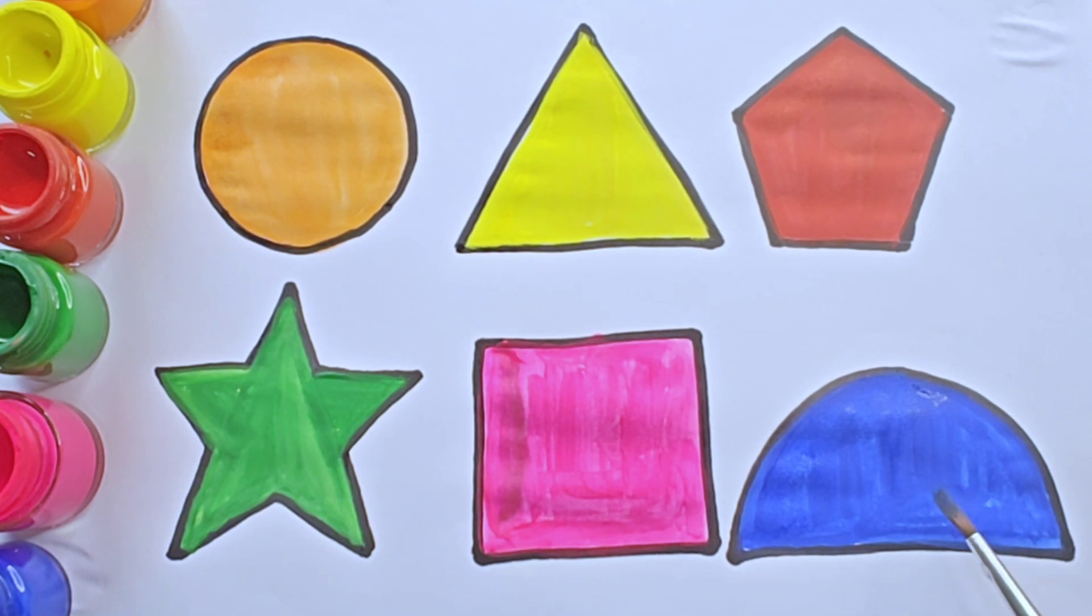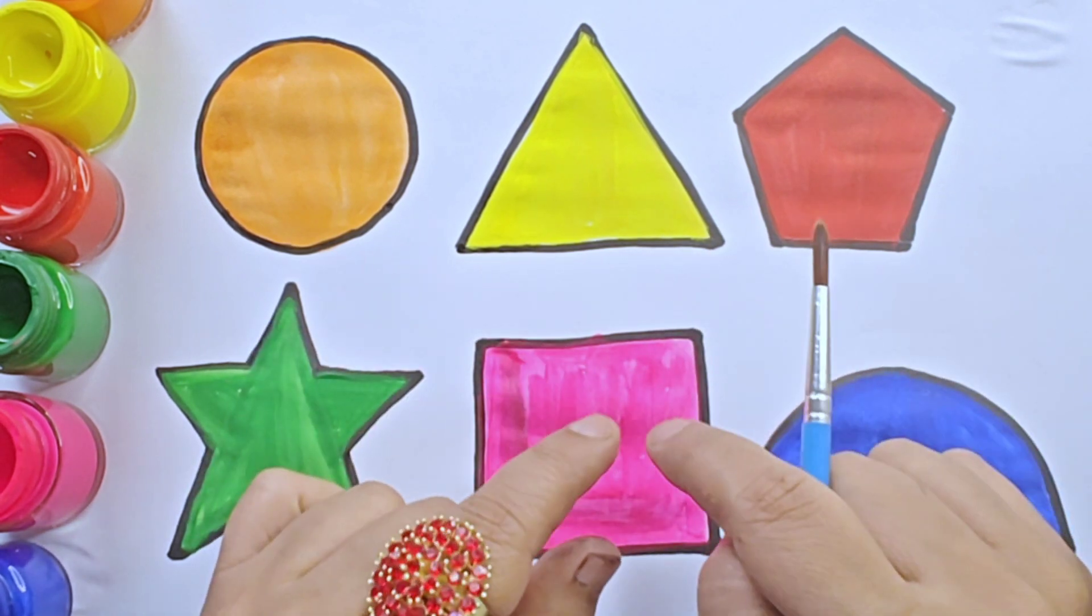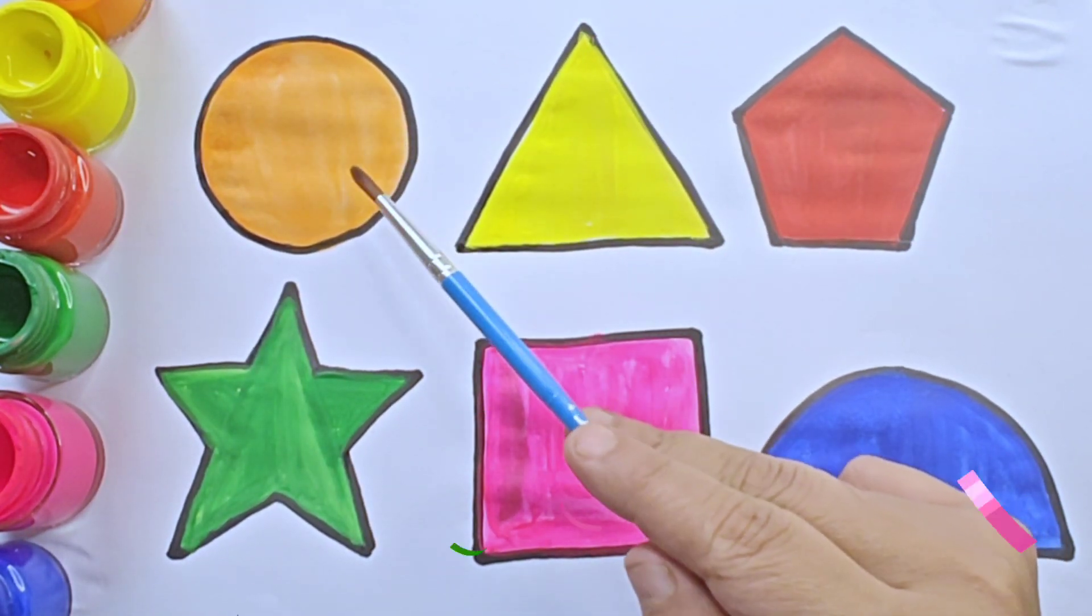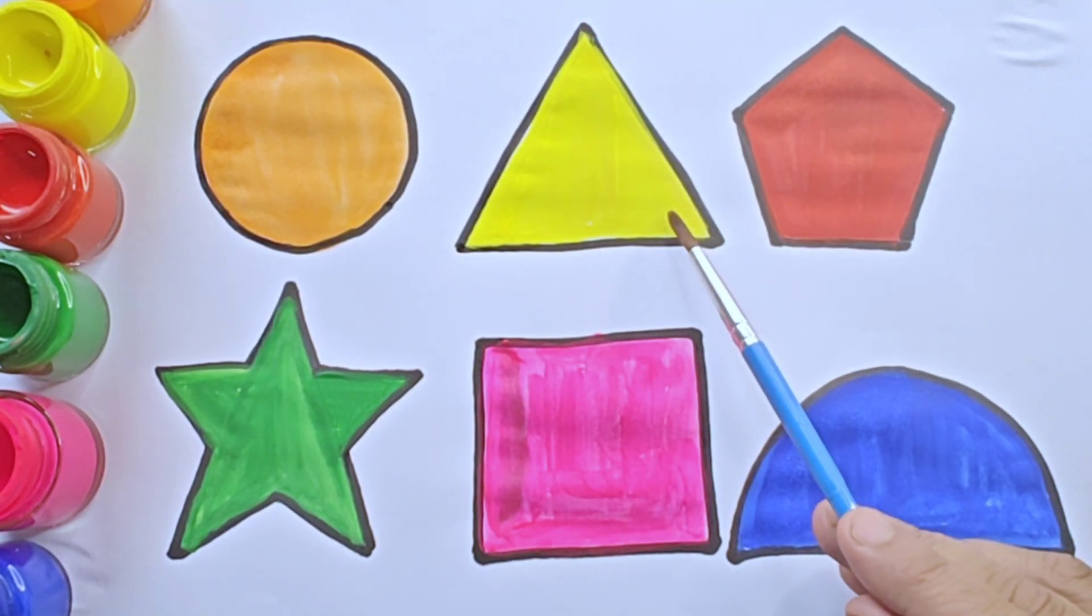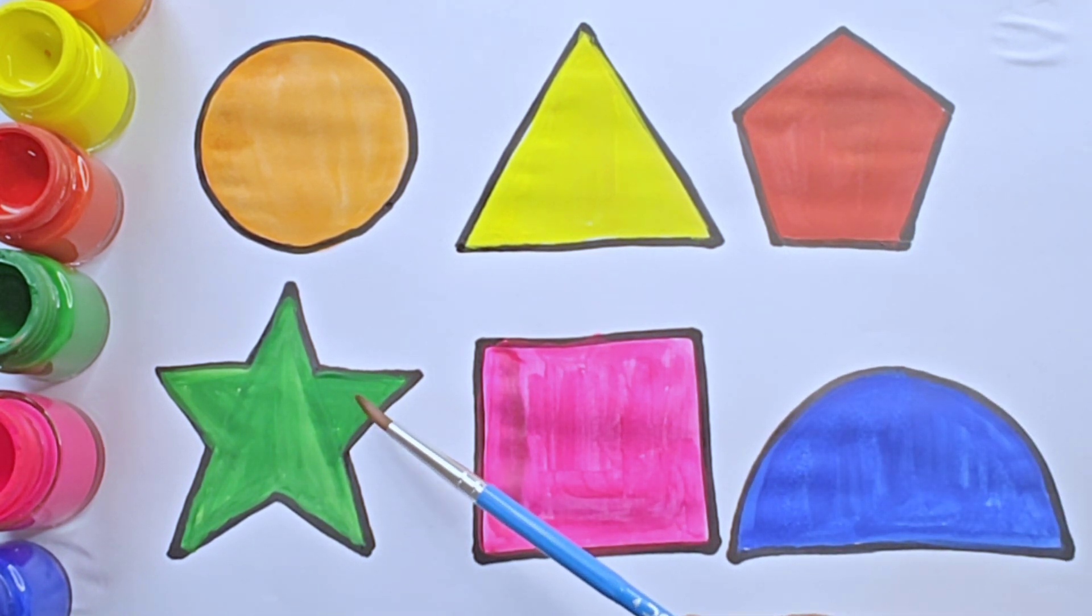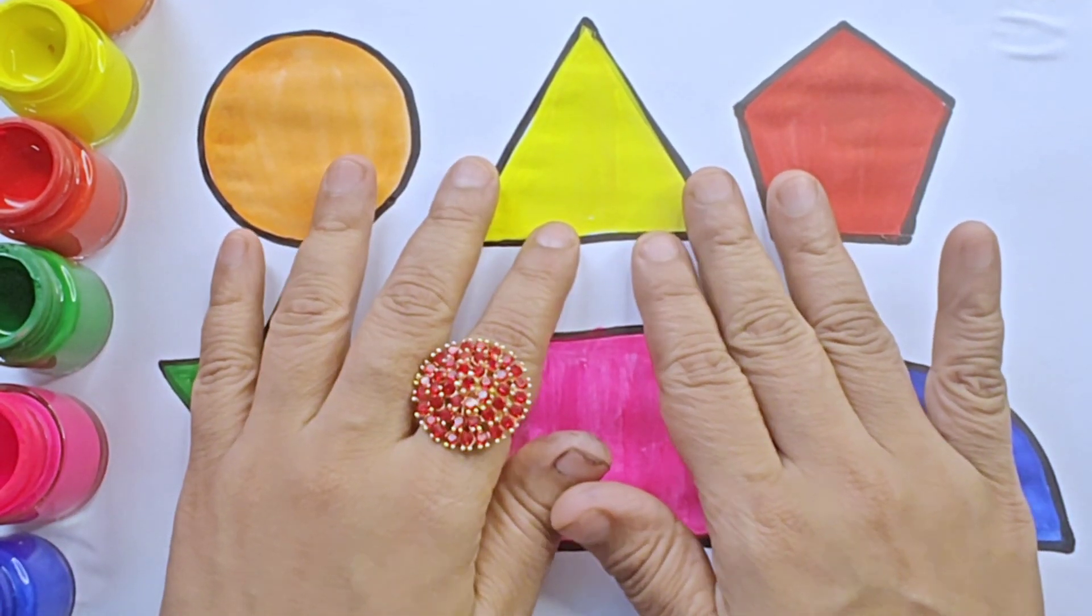It is semi circle or half circle. Hence, let us recall the shape names and color names once again. This is circle, orange color, equilateral triangle, yellow color, pentagon red color, 5-pointed star, green color, square, pink color, half circle or semi circle, blue color. Thanks for watching this video.